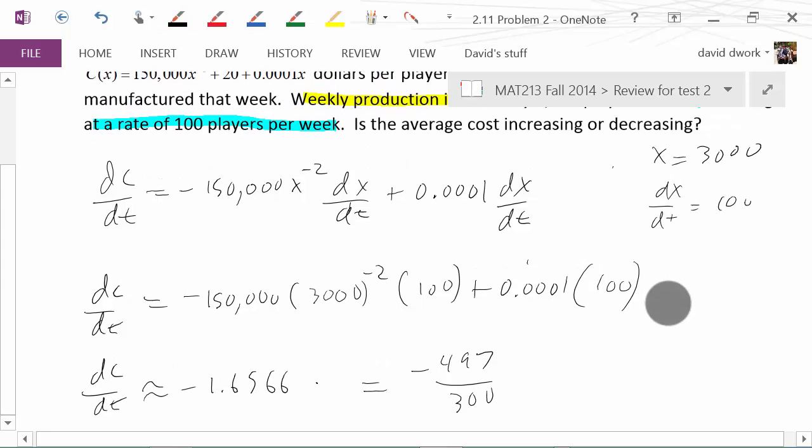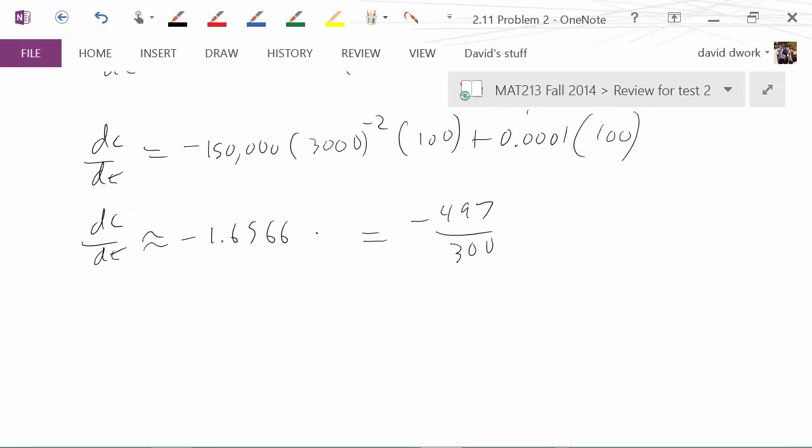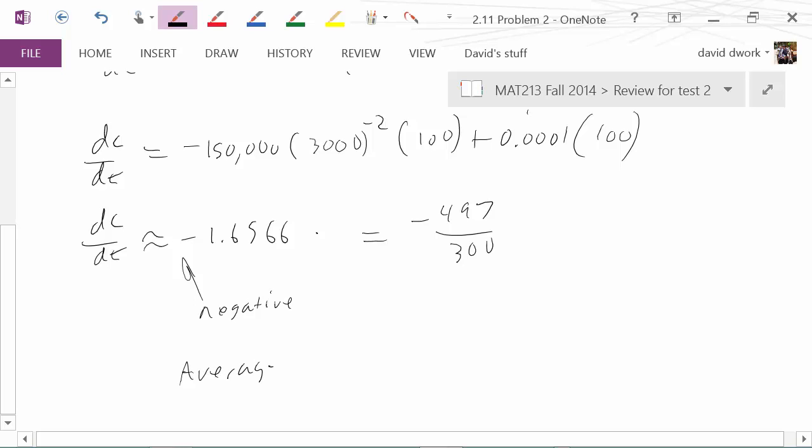So there you go. So let's answer the question. Is the average cost increasing or decreasing? Because we see a negative number here, we can now say that we see that the average cost is decreasing. And there's your answer.